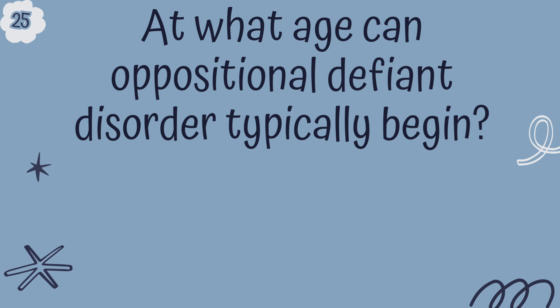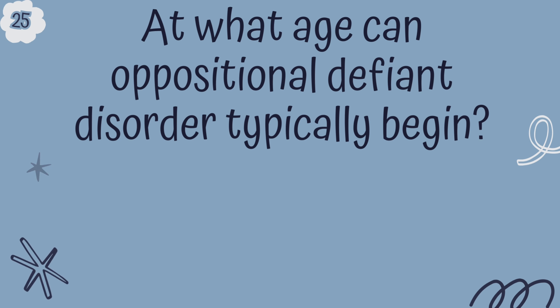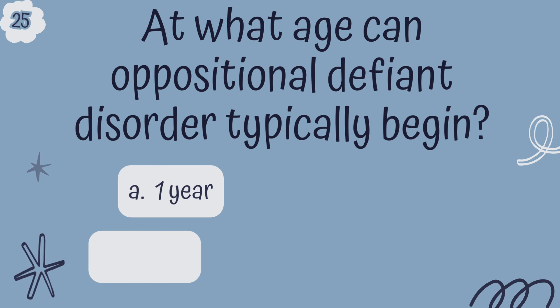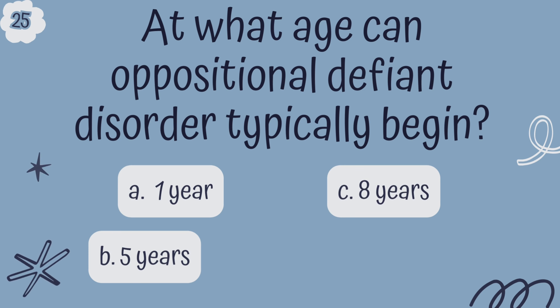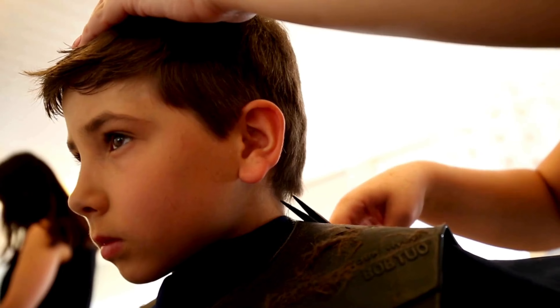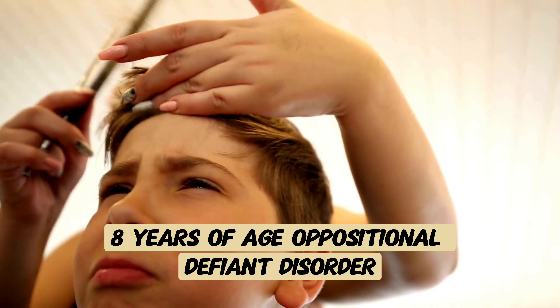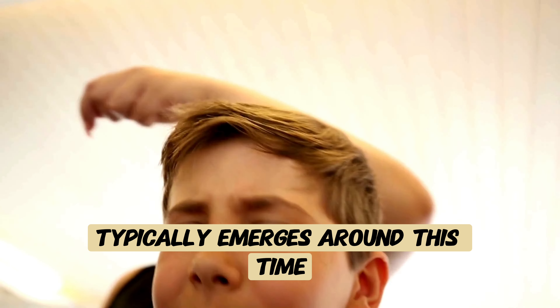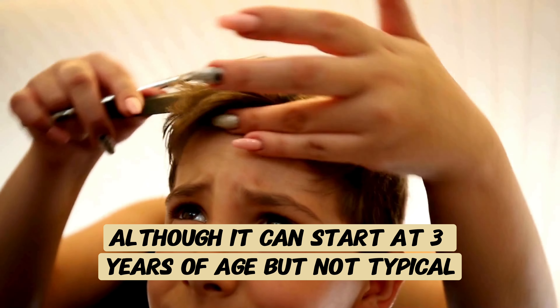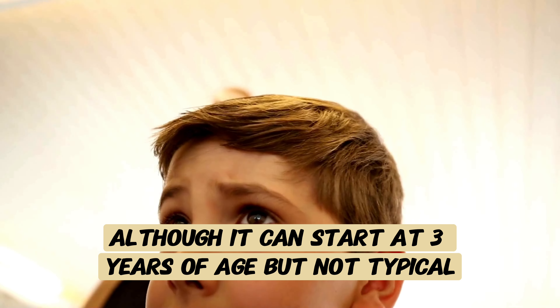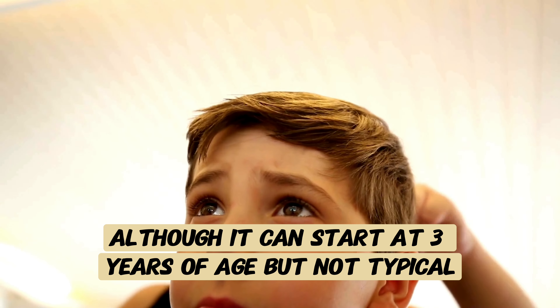Question 25. At what age can oppositional defiant disorder typically begin? A. One year, B. Five years, C. Eight years of age, or D. 12 years of age? The correct answer is C, eight years of age. Oppositional defiant disorder typically emerges around this time, although it can start at three years of age, but that is not typical.